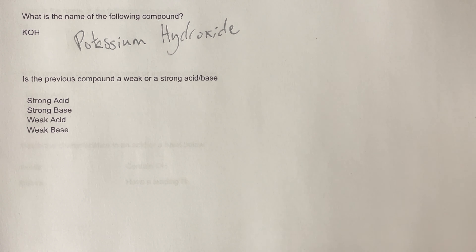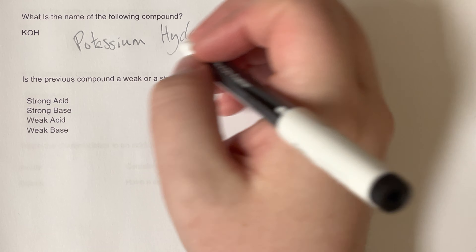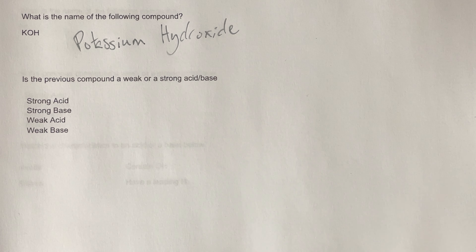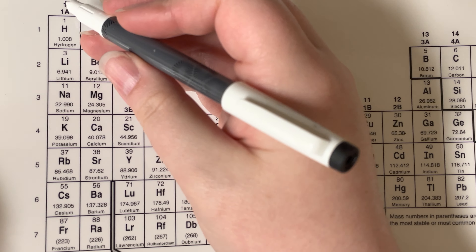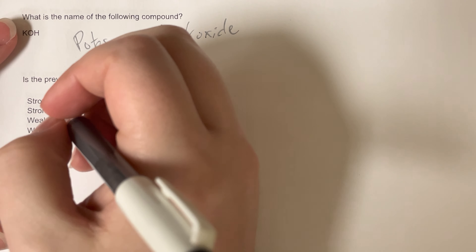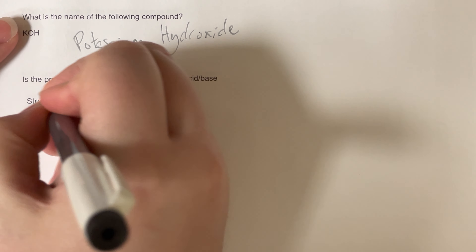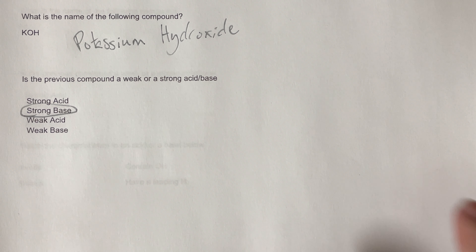Is the previous compound a weak or strong acid or base? Potassium hydroxide contains hydroxide, which makes this a base. I just need to figure out if it is strong or weak. My strong bases are all alkali metals bonded to hydroxide, or heavy alkaline earth metals bonded to hydroxide. Potassium is an alkali metal in column one, so potassium hydroxide is a strong base.